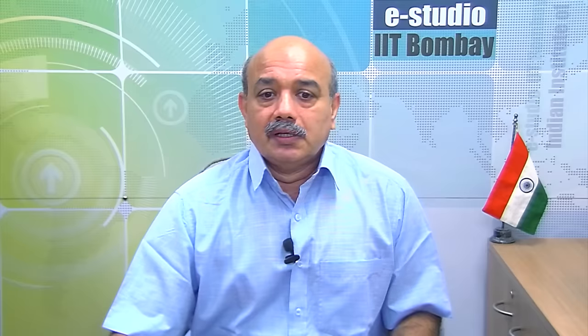The scientific method builds on the prior knowledge that is already available. By end of 19th century, J.J. Thomson had conducted experiments involving electric discharge through different gases, and his results were published in 1897. These experiments had revealed that atoms of different elements contain negatively charged particles. At that point they were not named, but later these particles were named as electrons.